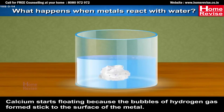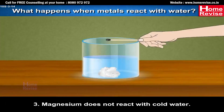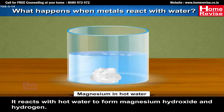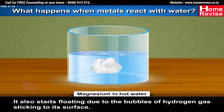Calcium starts floating because the bubbles of hydrogen gas formed stick to the surface of the metal. Magnesium does not react with cold water; it reacts with hot water to form magnesium hydroxide and hydrogen. It also starts floating due to the bubbles of hydrogen gas sticking to its surface.